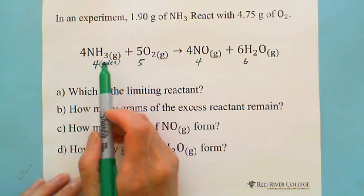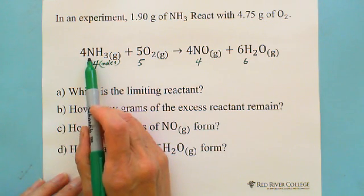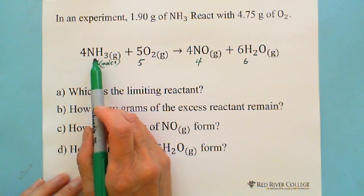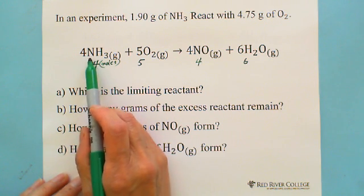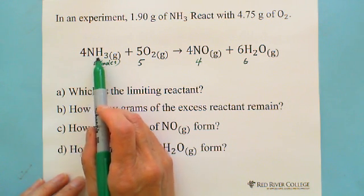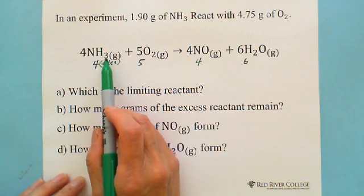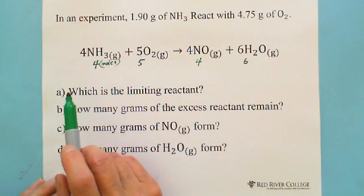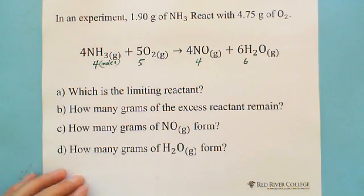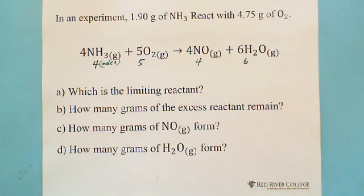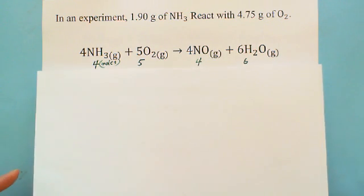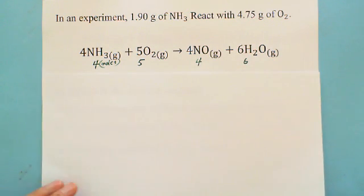To convert this, we need to check the periodic table to see what the molar mass is for nitrogen, hydrogen, and oxygen. So we can calculate the molar mass on another sheet.